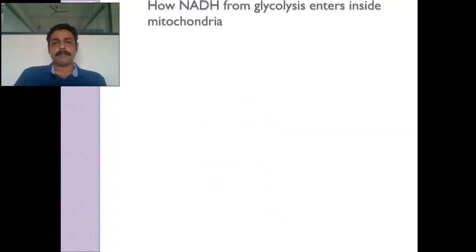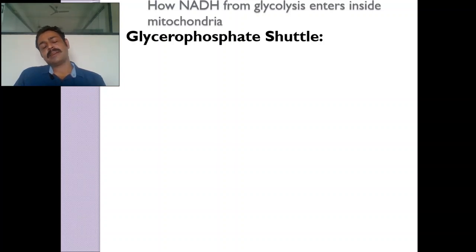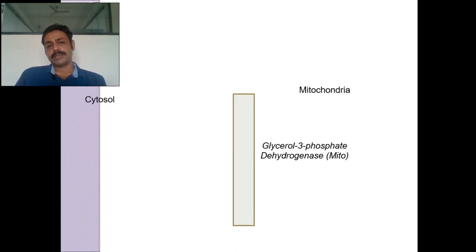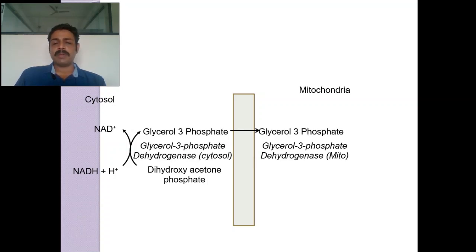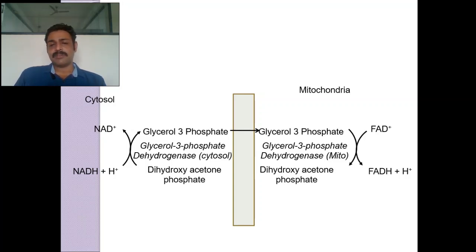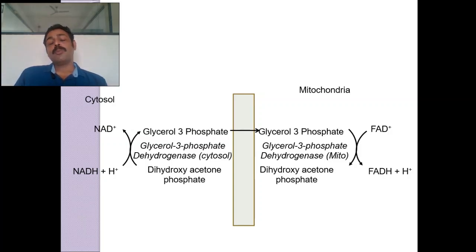How does NADH from glycolysis — which occurs in the cytosol — enter into the mitochondria? By two shuttles: one is the glycerophosphate shuttle and the other is the malate-aspartate shuttle. In the glycerophosphate shuttle, dihydroxyacetone phosphate first becomes glycerol-3-phosphate by utilizing NADH. Glycerol-3-phosphate is permeable inside the mitochondria, and inside it becomes dihydroxyacetone phosphate again, but it uses FAD. So there will be an obvious energy loss: NADH pumps 10 protons producing around 2.5 ATP, but FADH₂ produces only 1.5 ATP using 6 protons. When the glycerophosphate shuttle is used, you lose 1 ATP.